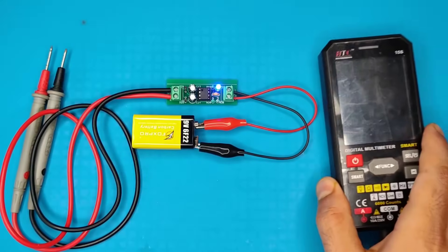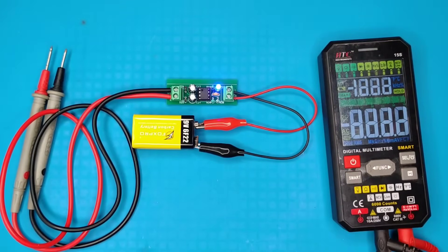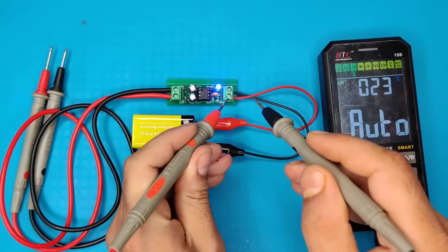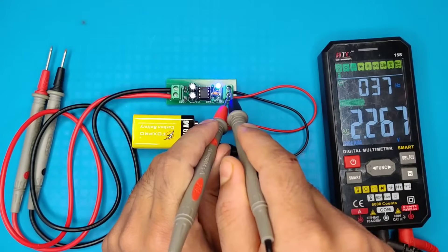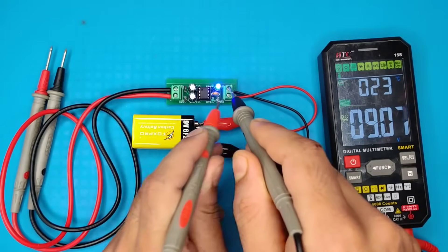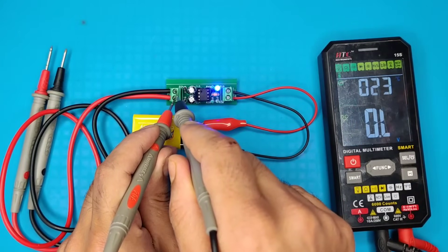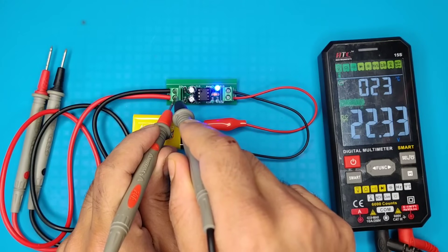I used multimeter to show you the input and output voltage of this circuit. As you can see input is 9.5 volts, and output is boosted to 22.3 volts without any inductor coil.